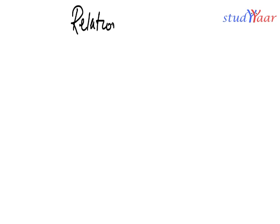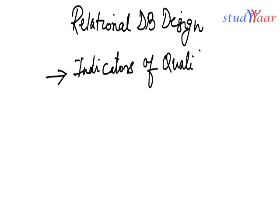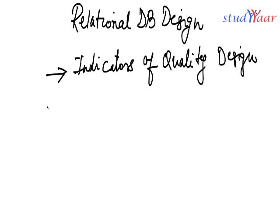In this session we are going to talk about relational database design. Here I am going to talk about what are the indicators of quality of design — how you can differentiate a good design from a bad design. We are going to see metrics of design.